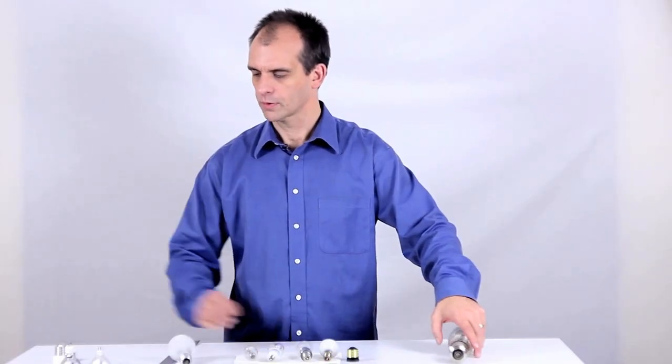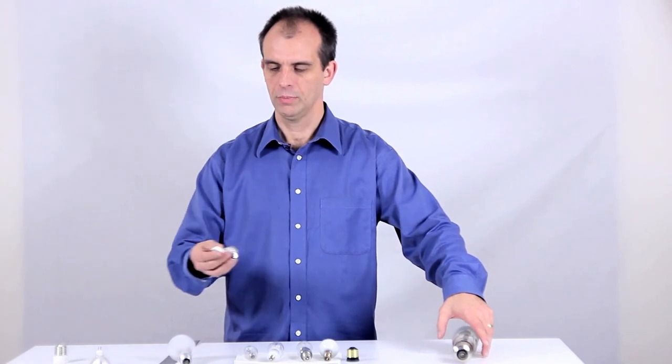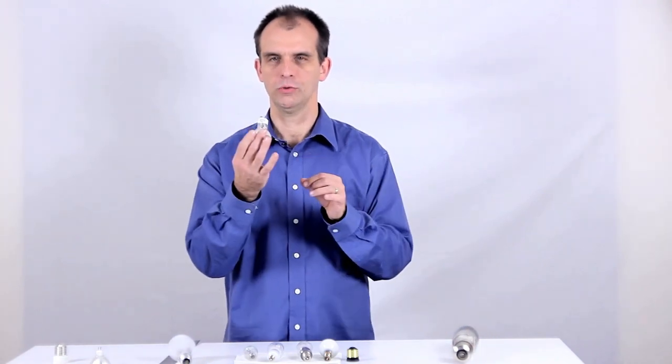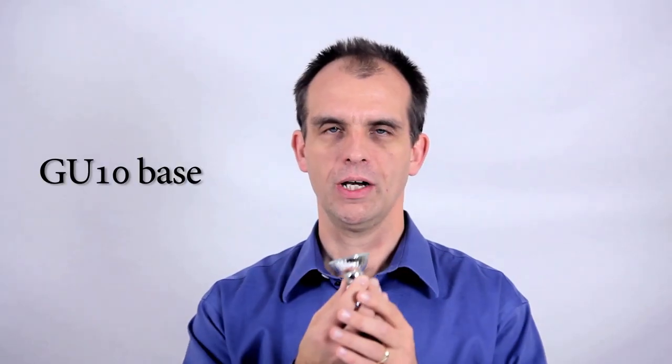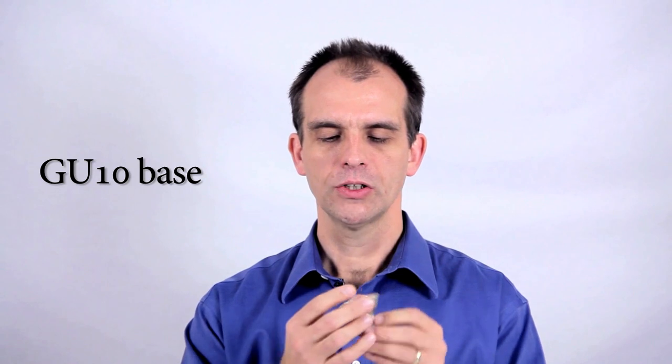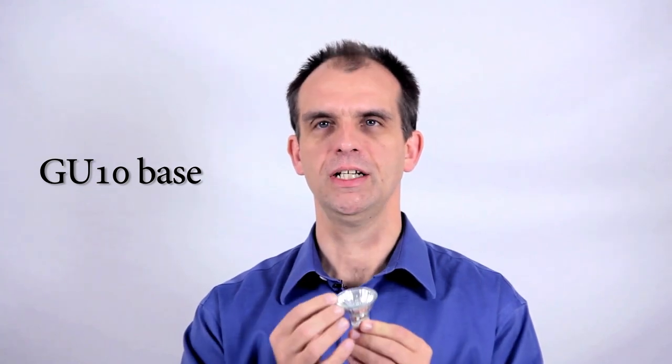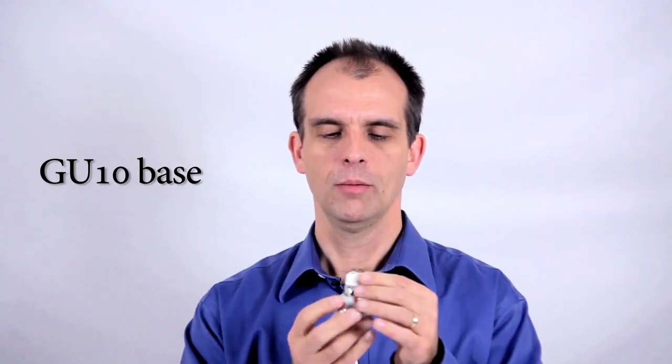Now, we have another beast here, which is the GU10 base. This is on an MR16 halogen bulb and we have LED versions of these as well. So, it's 16 eighths of an inch across, but 10 millimeter pin spacing.